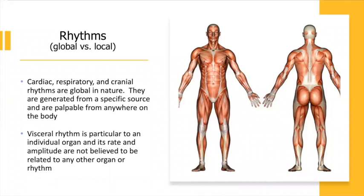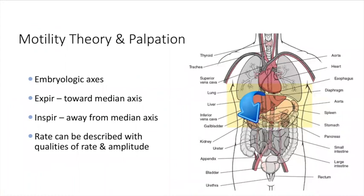Cardiac, respiratory, and cranial rhythms are global: the heart's beat is palpable in arteries throughout the whole body; when you take a breath in, your rib cage expands and the paired bones externally rotate, observable throughout the entire body. For those that feel cranial motility, it is also palpable through the whole body. Visceral rhythm, in the current way of looking at it, is organ-specific — so there are different rhythms all happening at the same time. Speaking about motility first: the theory is that what we're feeling is a very subtle, small excursion palpation mirroring the embryologic axes of the unfolding of the organ.